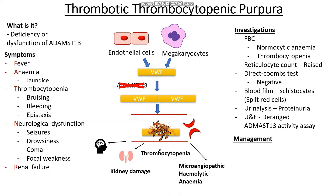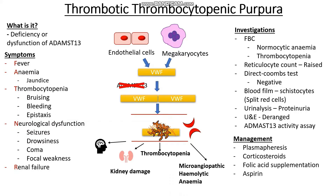In terms of management, the first thing is to remove a lot of these clots and things that are building up in our blood. We do this with a process known as plasmapheresis, where we can filter the plasma. The next thing that we can use is corticosteroids. We should also give folic acid supplementation, since we're breaking down lots and lots of our red cells. And lastly, because we have lots of these clots going all around our body, we want to minimize the risk they might get deposited in areas such as our heart or brain and reduce the risk of a stroke or MI, so we can give aspirin.